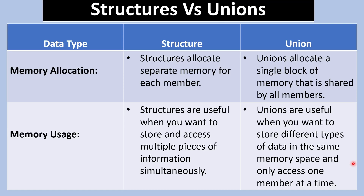Structures allocate memory separately for each member, while unions allocate a single block of memory shared by all members. Structures are useful when you want to store and access multiple pieces of information simultaneously. Unions are useful when you want to store different types of data in the same memory space and only access one member at a time.